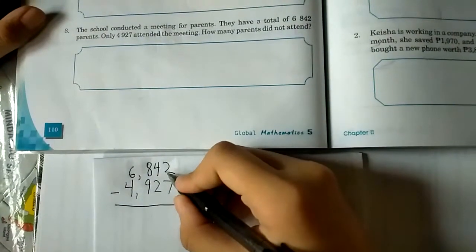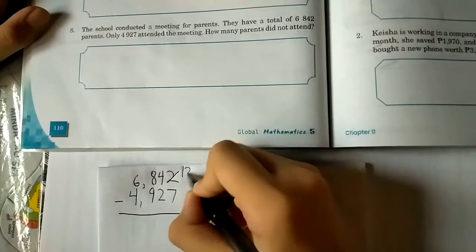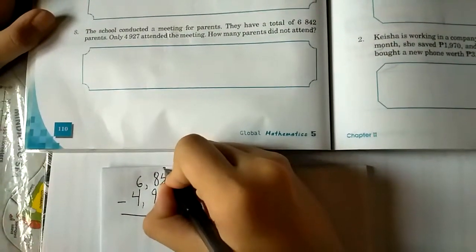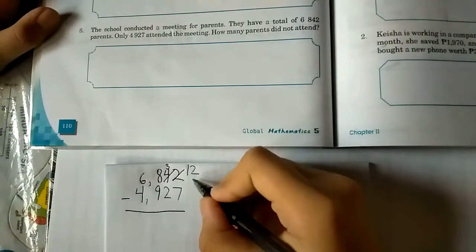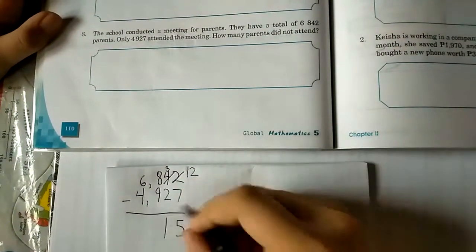2 is going to borrow from 4, so 2 will become 12 and 4 will become 3. 12 minus 7 equals 5. 3 minus 2 equals 1.